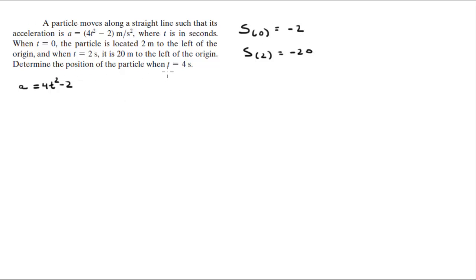So I want you to find the position when t equals 4. You know that the integral to find the velocity, the integral of the acceleration, is equal to the velocity. So the integral with respect to time of the acceleration gives you the velocity, which comes out to be 4t cubed over 3, minus 2t plus a constant.